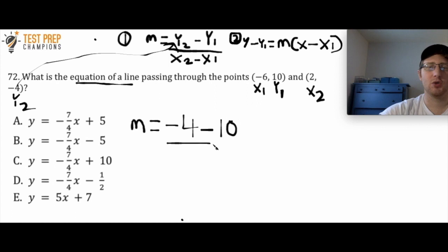Alright, so now we go down to x2 minus x1. And my x2 is simply 2. And my x1 is -6. So since I'm doing minus -6, I can just make this plus 6. Now you're welcome to use your calculator if you'd like to. I am just going to do this free-handed. So I have -4 minus 10 is going to be -14. 2 plus 6 is 8.